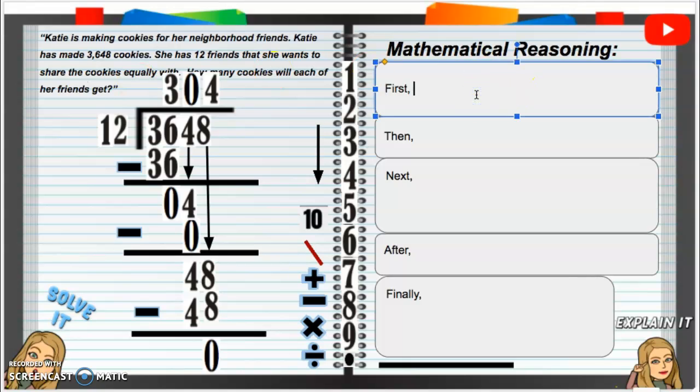First, rewrite the problem with 3,648 as your dividend and 12 as your divisor. And ask yourself, how many times does 12 go into 36?